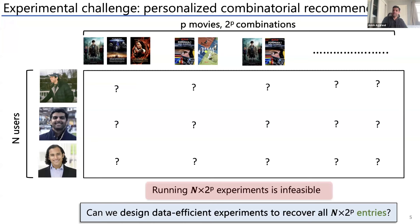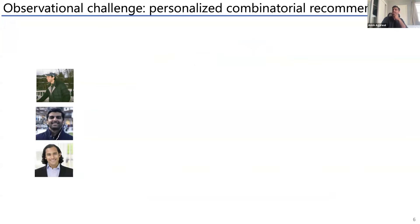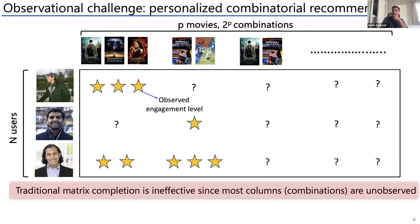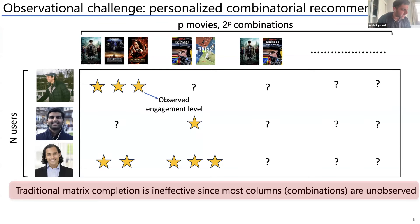One way to think about the problem is as a matrix: rows are users, columns are different combinations of movies, and you observe engagement levels for some subsets of combinations. If you try to apply matrix completion naively, it ends up poorly — for most combinations you haven't seen any entries. Matrix completion assumes sufficient entries per column, but here most columns have no observations at all, so even algorithmically and theoretically the sample complexity is bad.